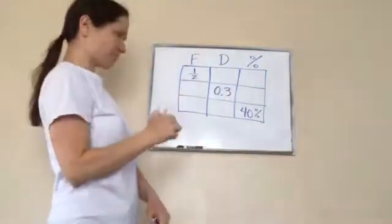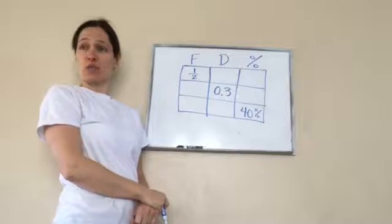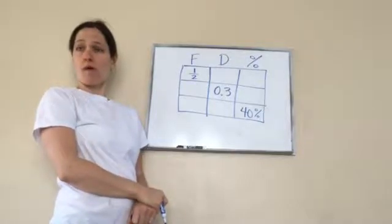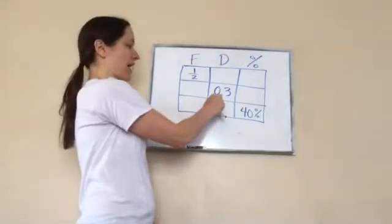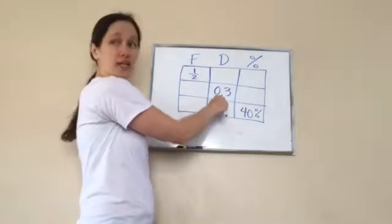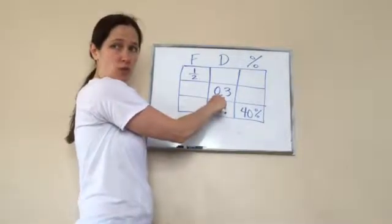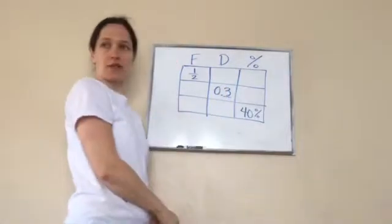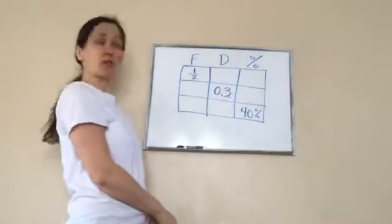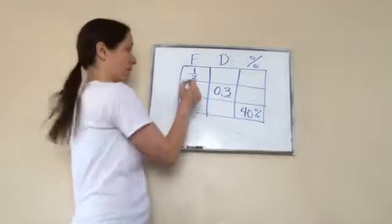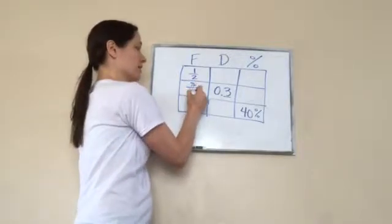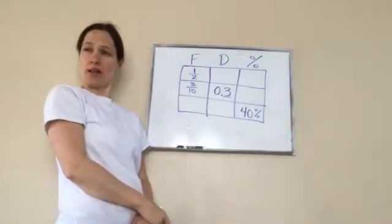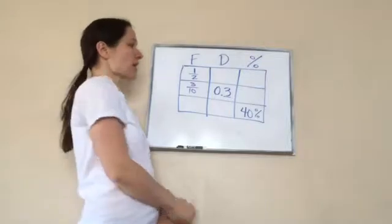I think the easiest one to do is a decimal. Let me tell you why. Because if it's in decimal form, then look what you can do. What place is this in? Tenths. So guess what it's gonna be as a fraction? Three tenths.